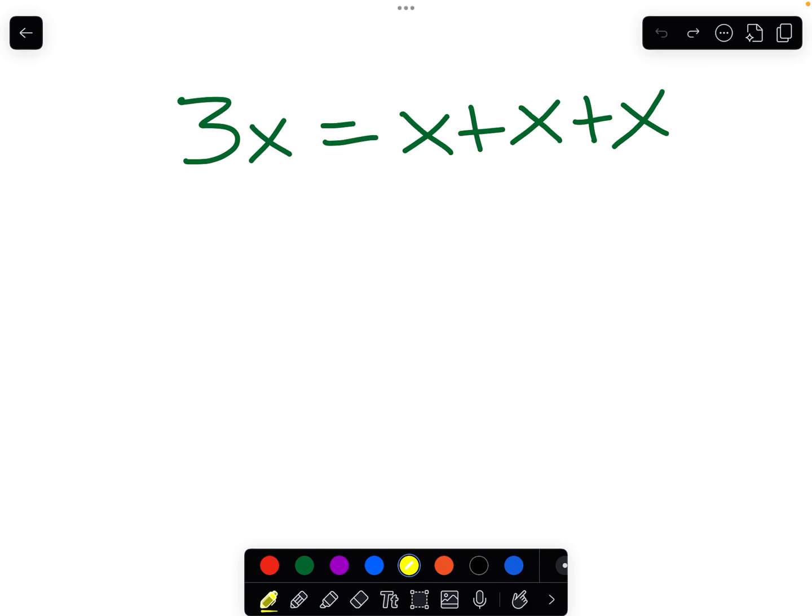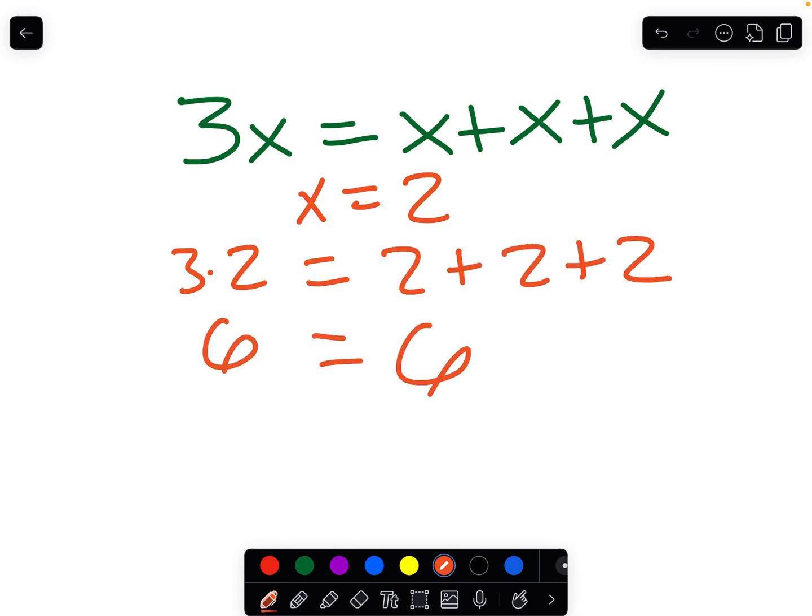But these are equivalent expressions. And if we're not always sure, we can substitute numbers. Let's pretend x equals 2. Well, 3 times 2 equals 2 plus 2 plus 2, and we know that's true because 6 equals 6.